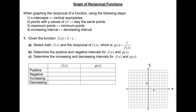Step 1. All the x-intercepts on the original function will become the vertical asymptotes on the reciprocal function. Vice versa — all the vertical asymptotes on the original function will become the x-intercepts on the reciprocal function.